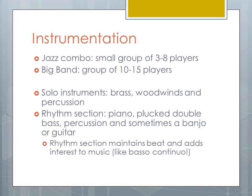The solo instruments usually used in jazz came from the brass family, woodwinds, and percussion. Every piece of jazz also has a rhythm section. In that rhythm section is usually a piano or keyboard instrument, a plucked double bass or upright bass, sometimes an electric bass, some percussion instruments including a drum set, drums or cymbals, and sometimes another plucked instrument such as a guitar or banjo. Solo instruments were free in how they interpreted tone colors, melodies, harmonies, and rhythms, but the rhythm section maintained the beat and added interest to the music — much like how basso continuo worked in the Baroque period.